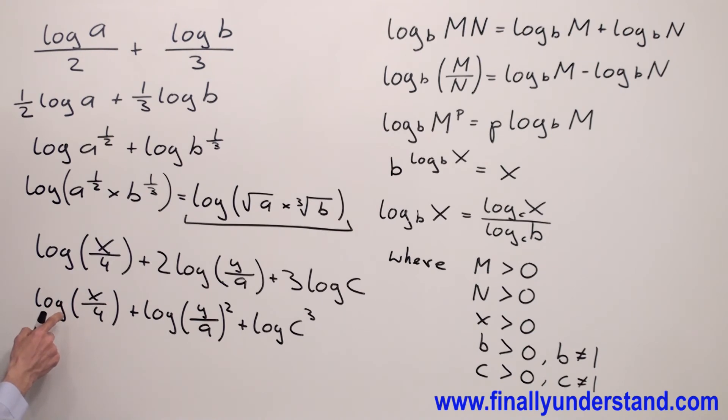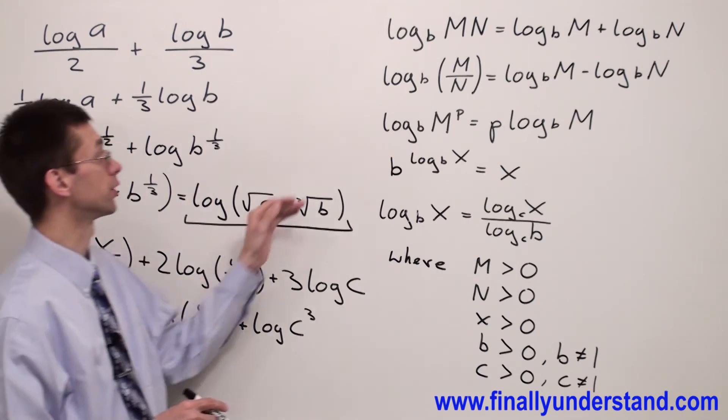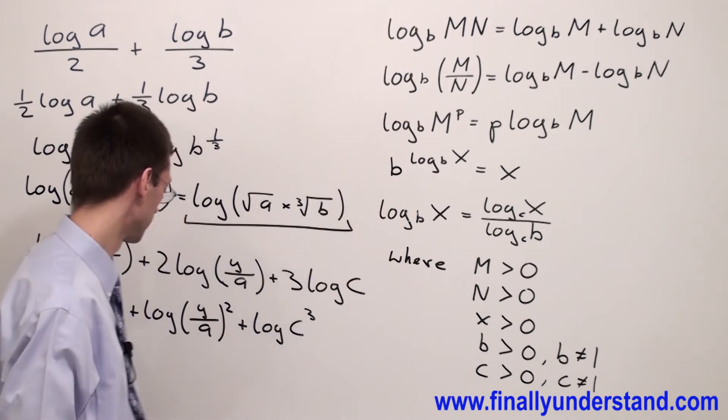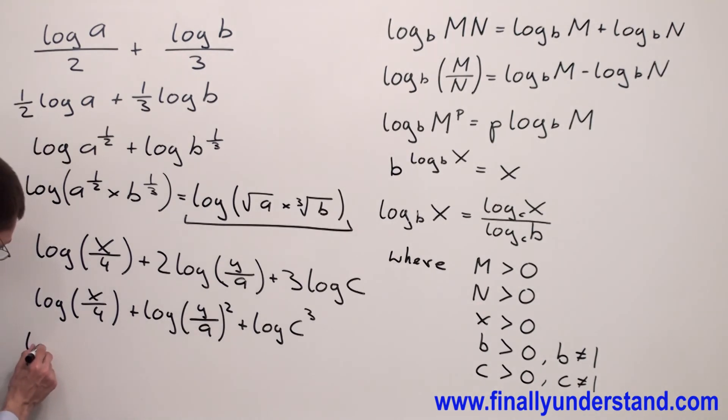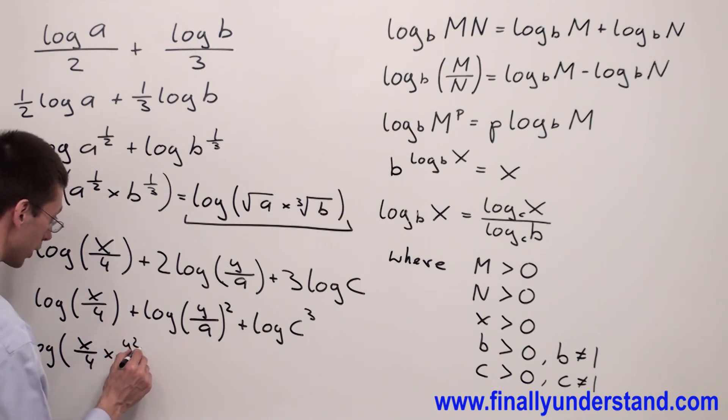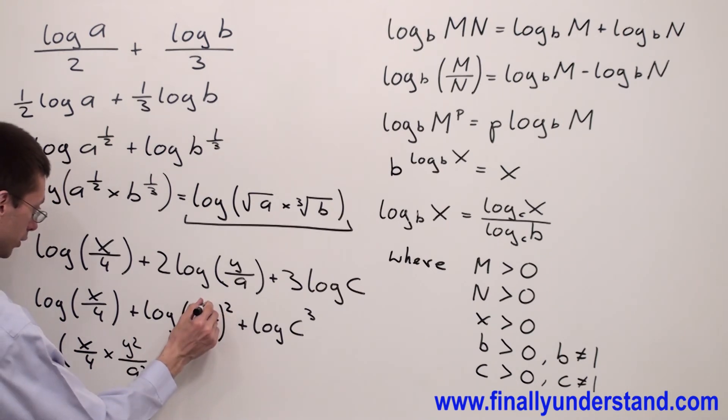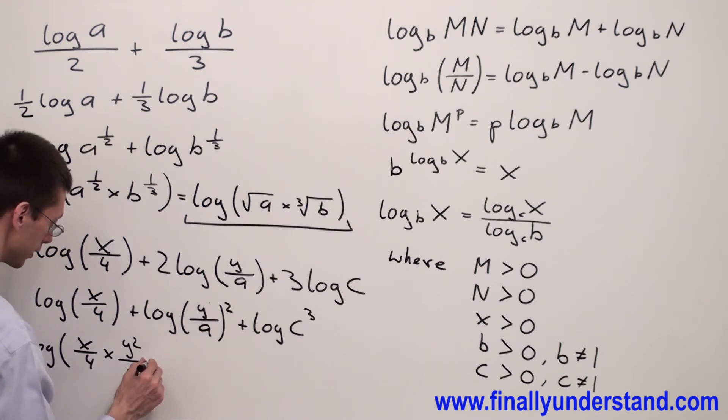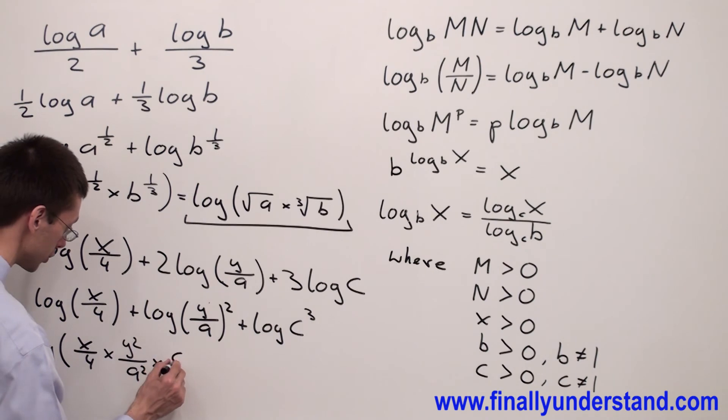Please notice that we have the sum of the logarithms with the same base. That's why I'm going to use the property for the logarithms of the product. And I'm going to rewrite this as log x over 4 times y square over a square because this square is going to square my y and it's going to square my a times c cube over 1.